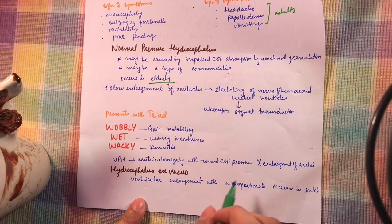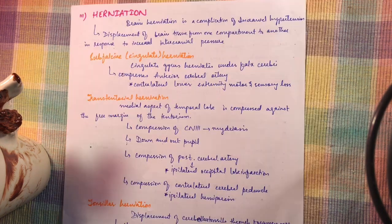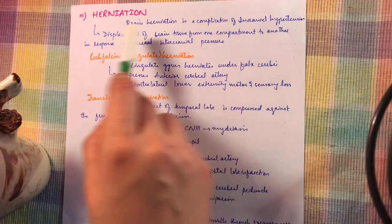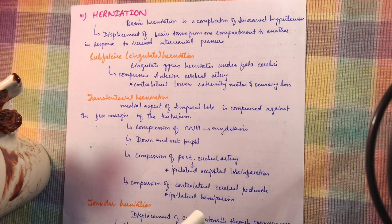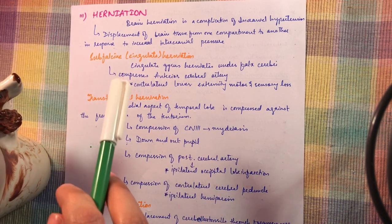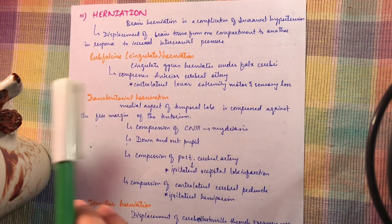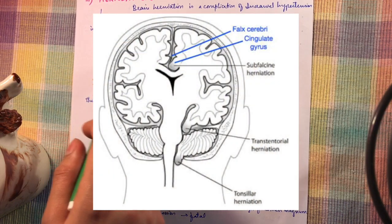In hydrocephalus ex-vacuo there is increase in CSF as well as enlargement of the sulci. Next cause is herniation. Brain herniation is a complication of intracranial hypertension — it is the displacement of brain tissue from one compartment to another in response to increased intracranial pressure. Anatomically, the falx cerebri separates the left and right brain hemispheres, and the tentorium cerebri separates the cerebrum above from the cerebellum below.